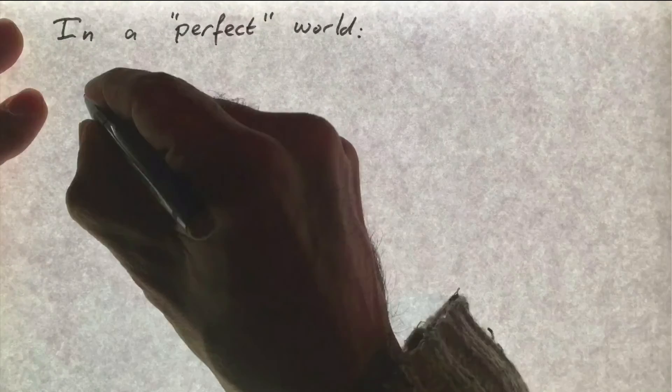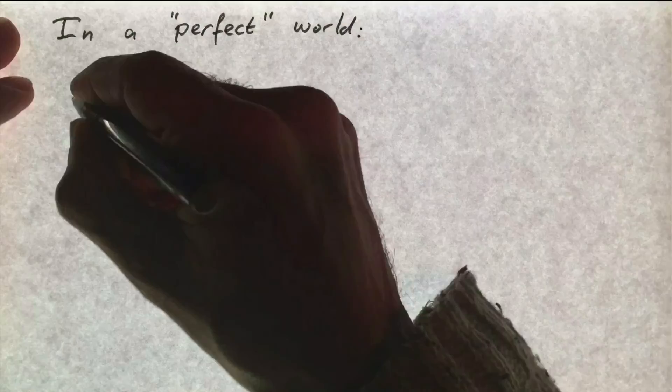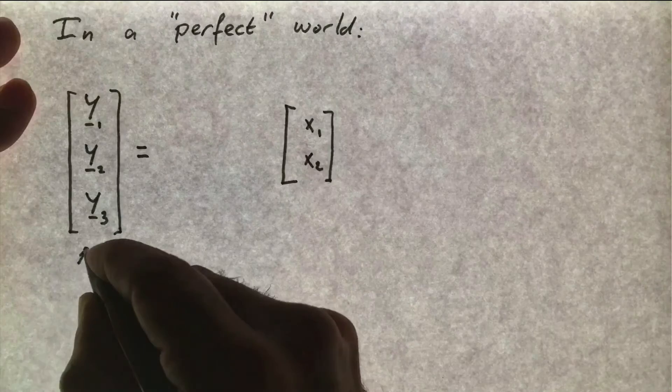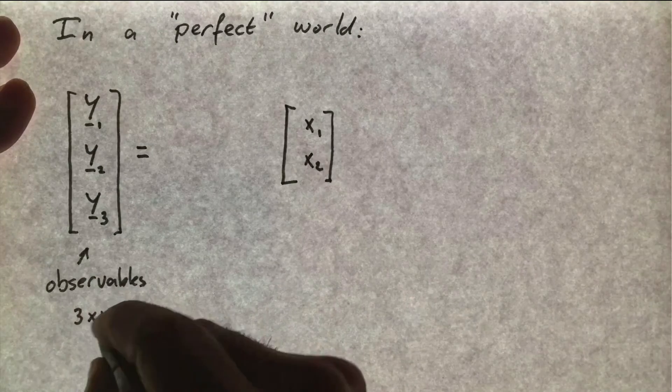In a perfect world, observations do not contain any errors. We can then write the three observables in a vector and relate them to the two unknowns also in a vector.